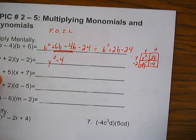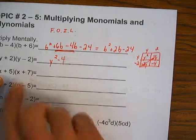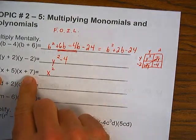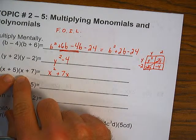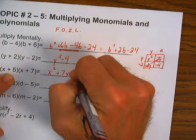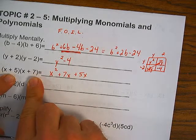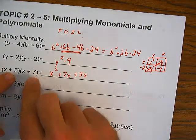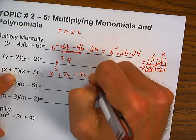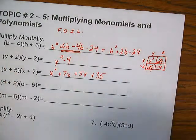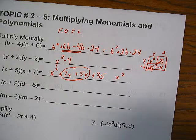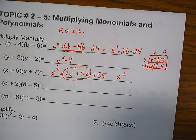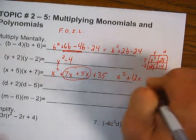Number 3, use FOIL. First: X squared. Outside: plus 7X. Inside: 5X. Last: 7 times 5 is 35. Now combine like terms: X squared, and 7X plus 5X is 12X, plus 35.